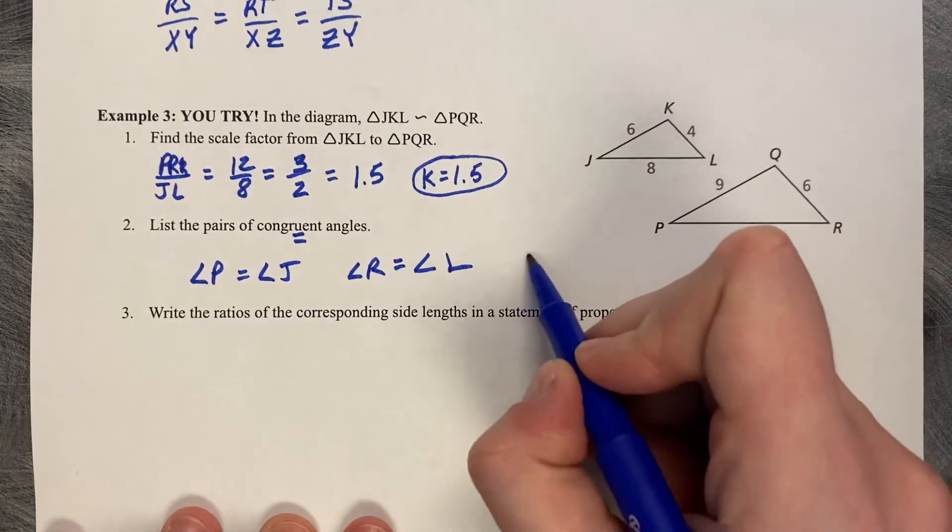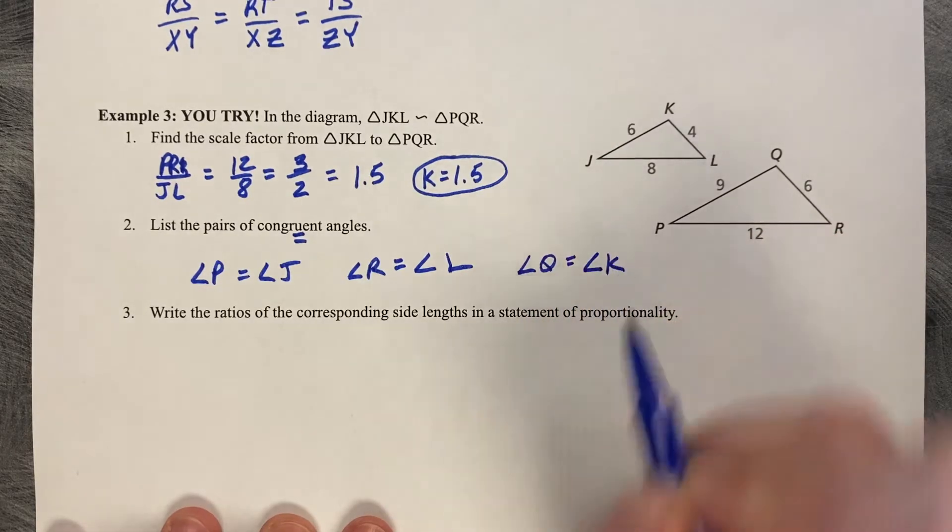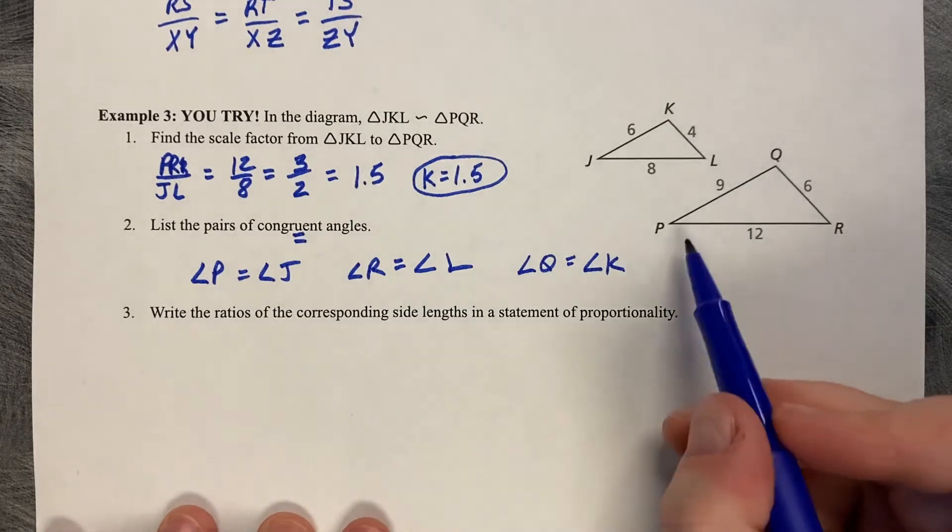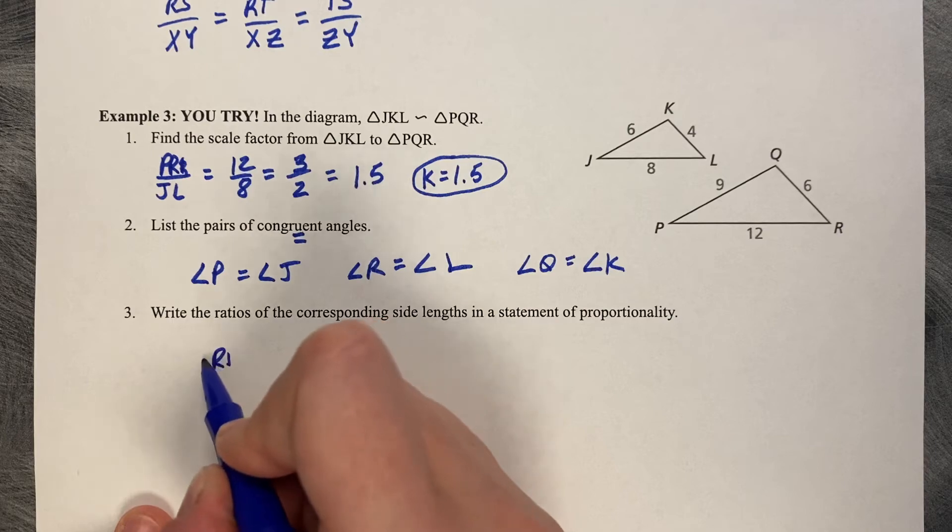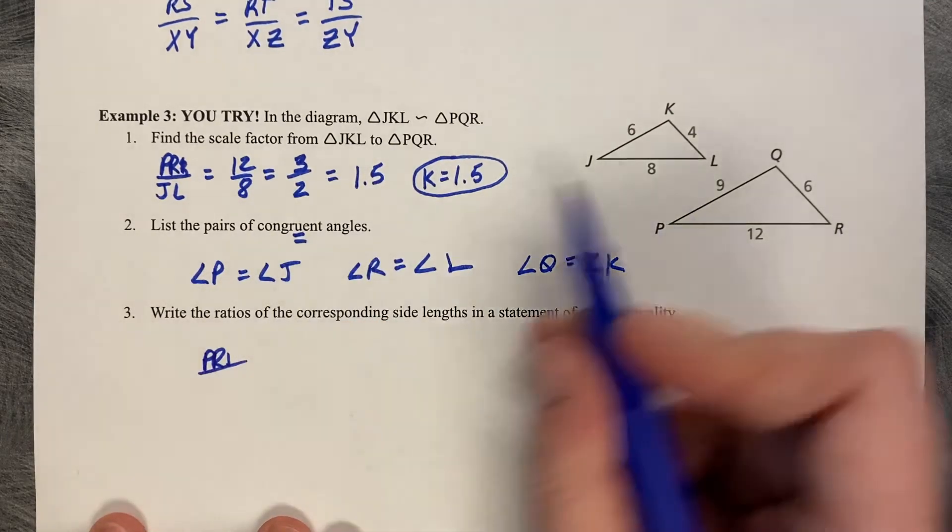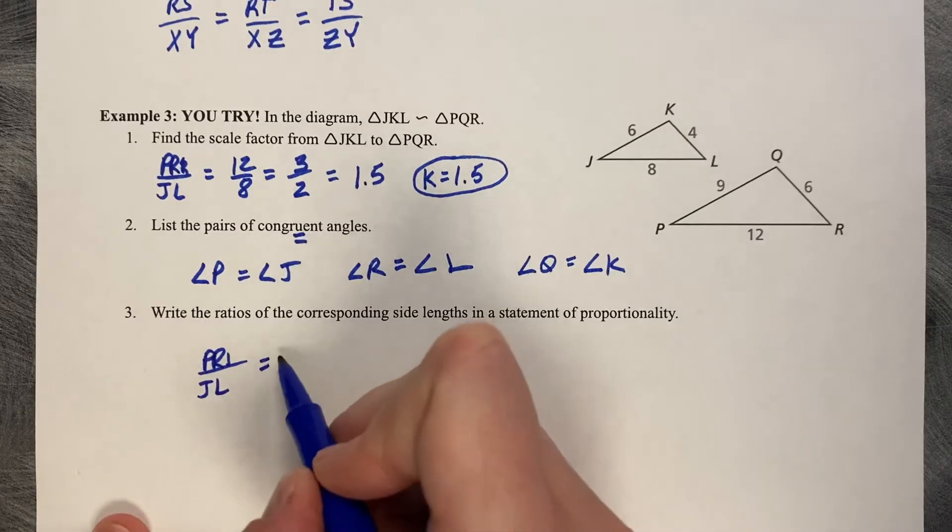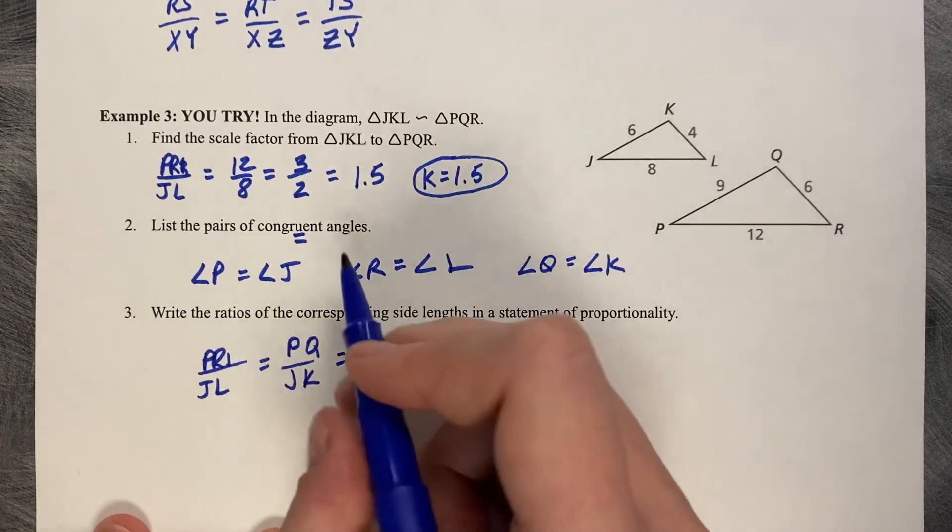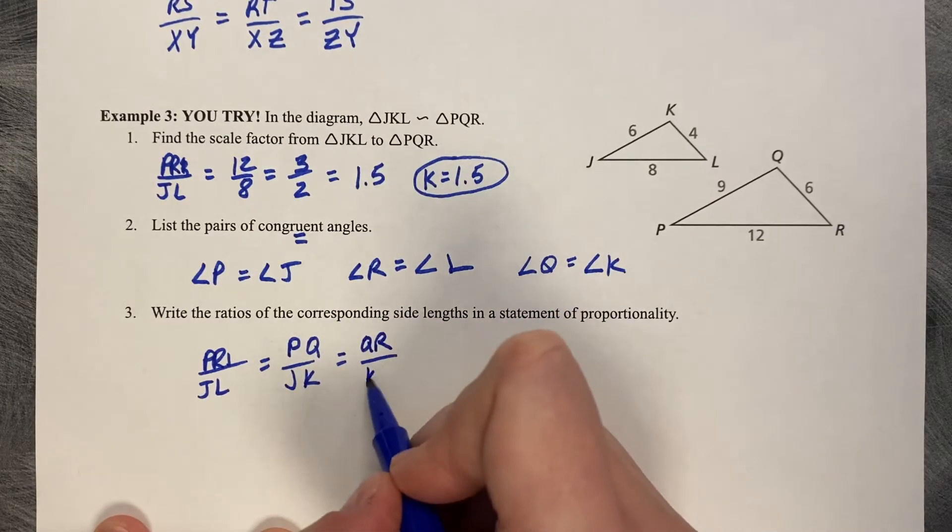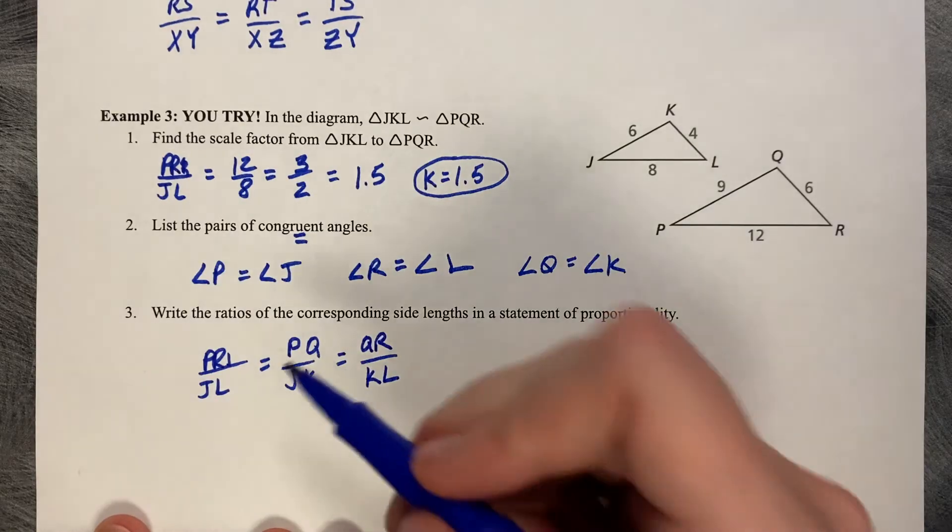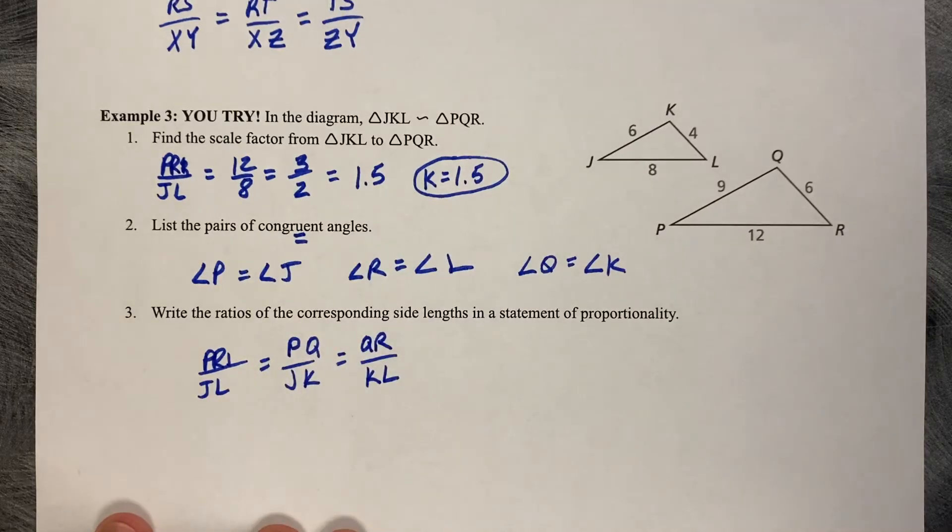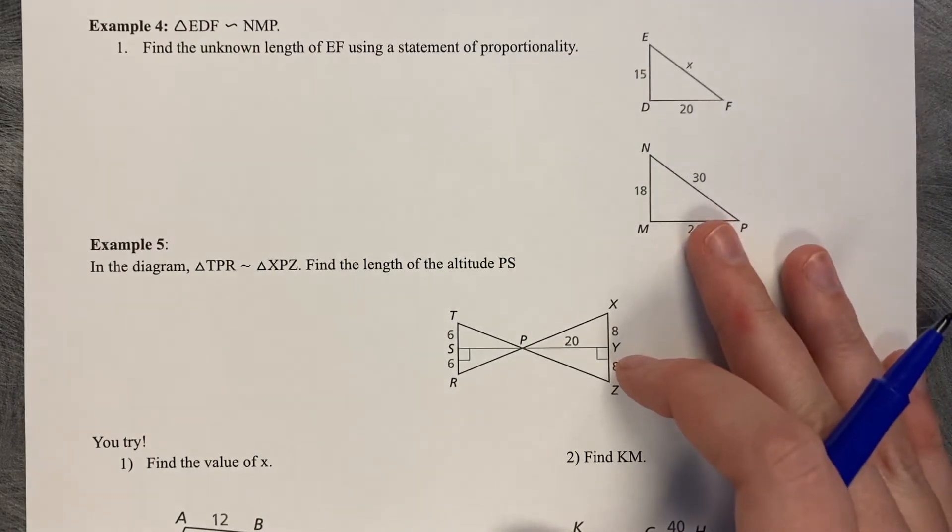And then angle Q is equal to angle K. And then you're going to write a statement of proportionality. I'm just going to pick PR to start with again. PR is to JL, and then PQ is to JK, and QR is to KL. As long as all the triangle side lengths are in the same positions.